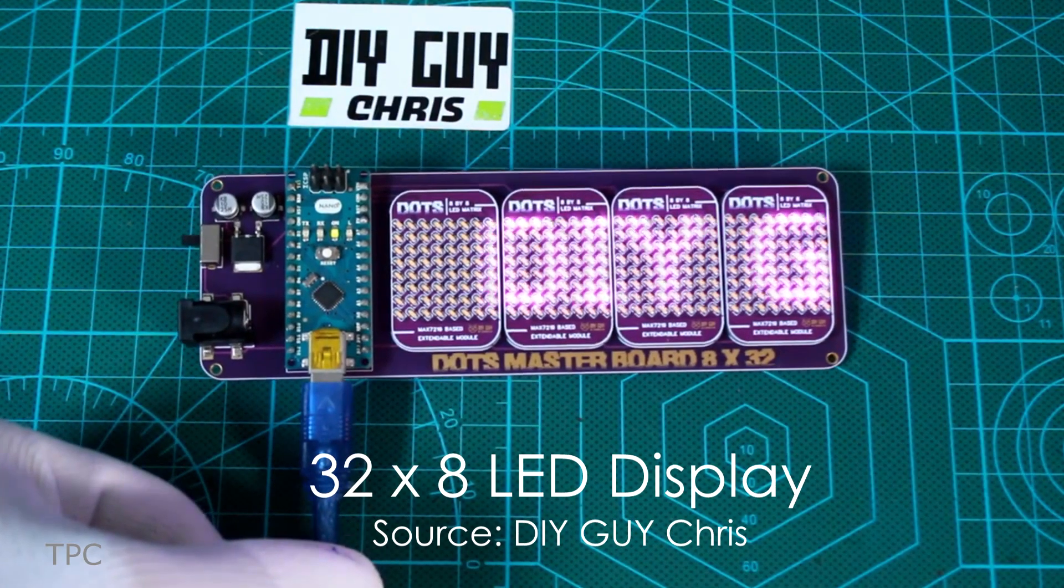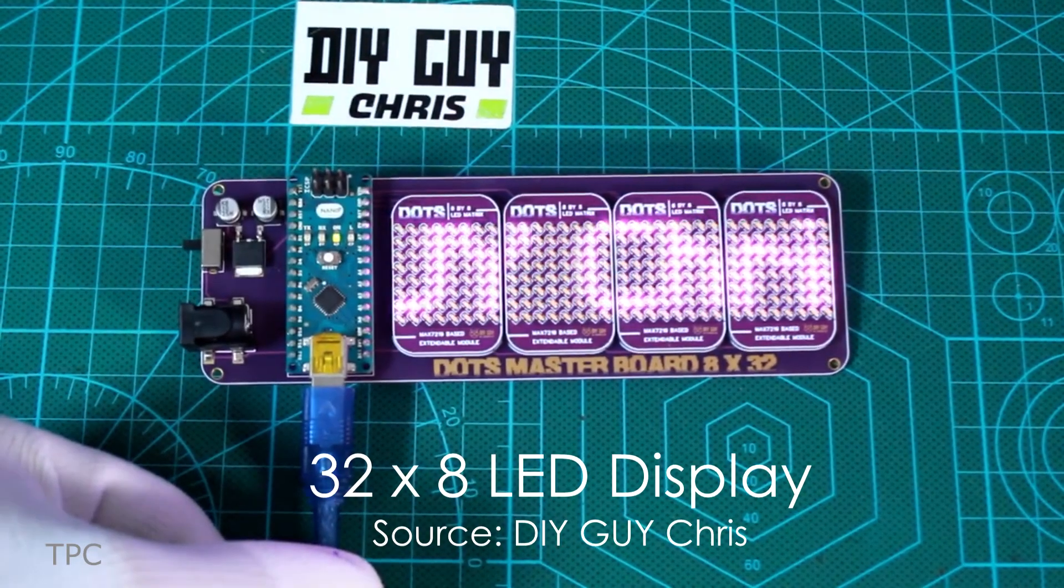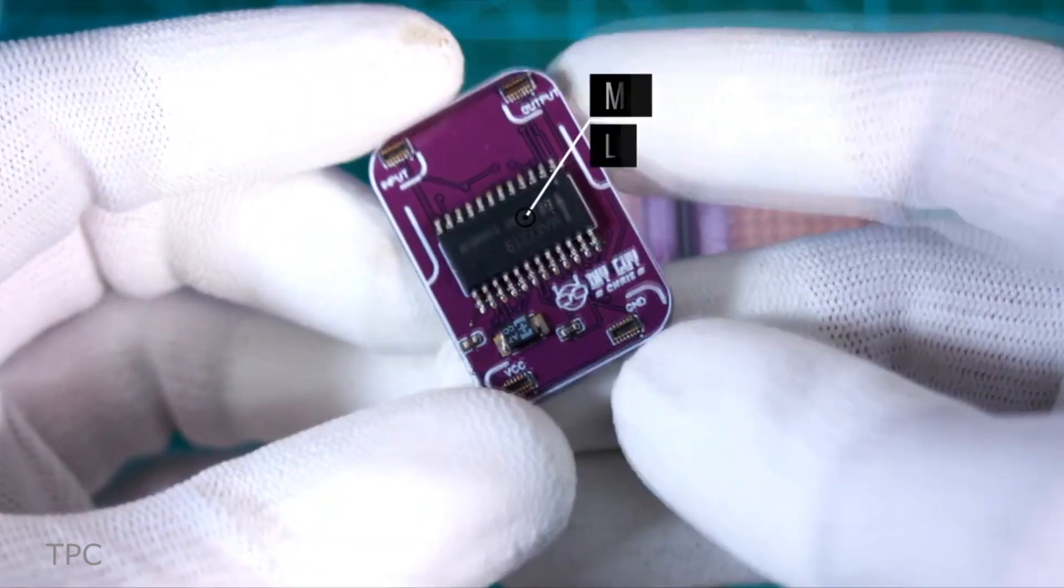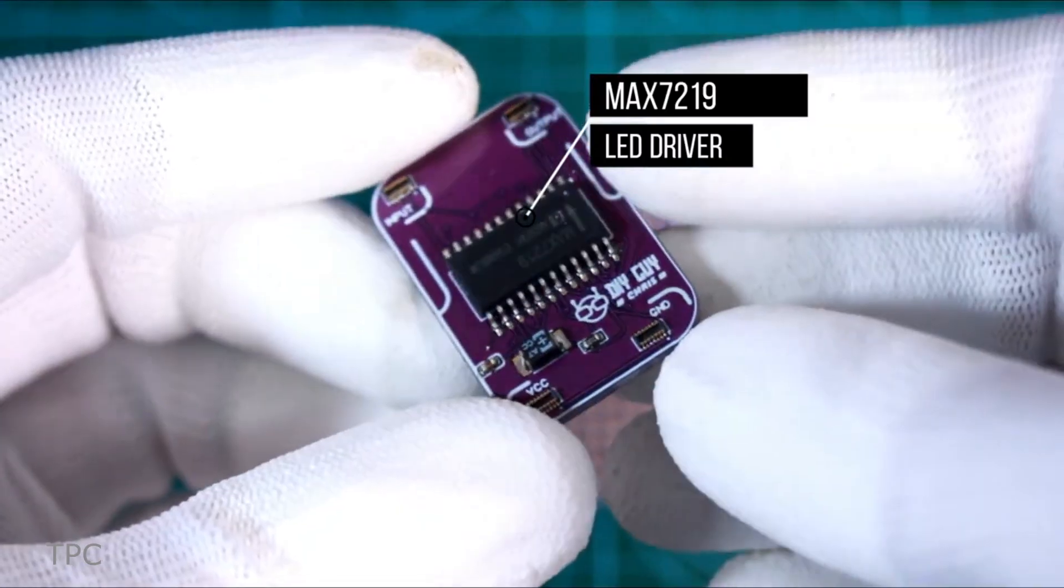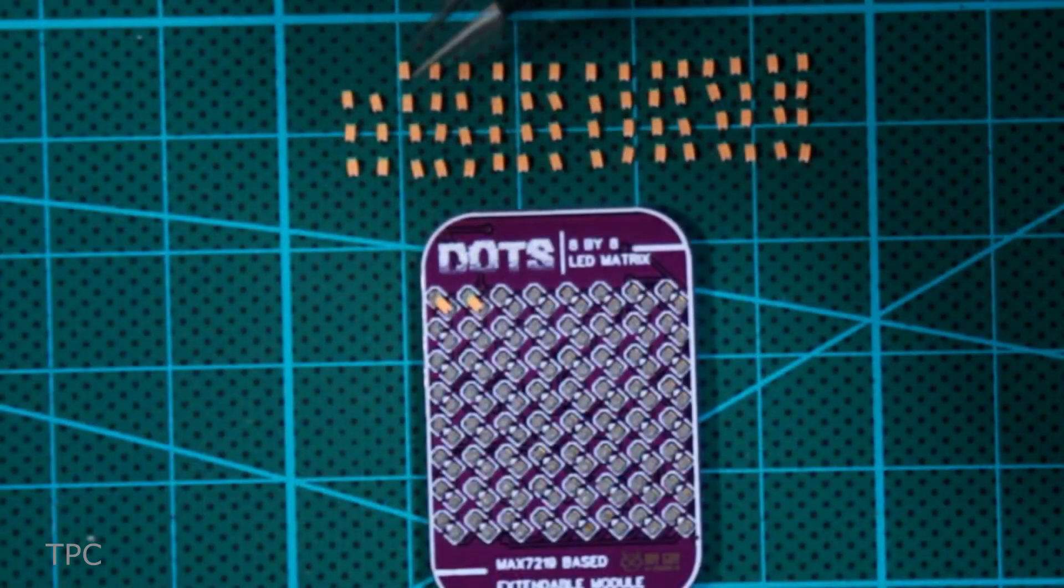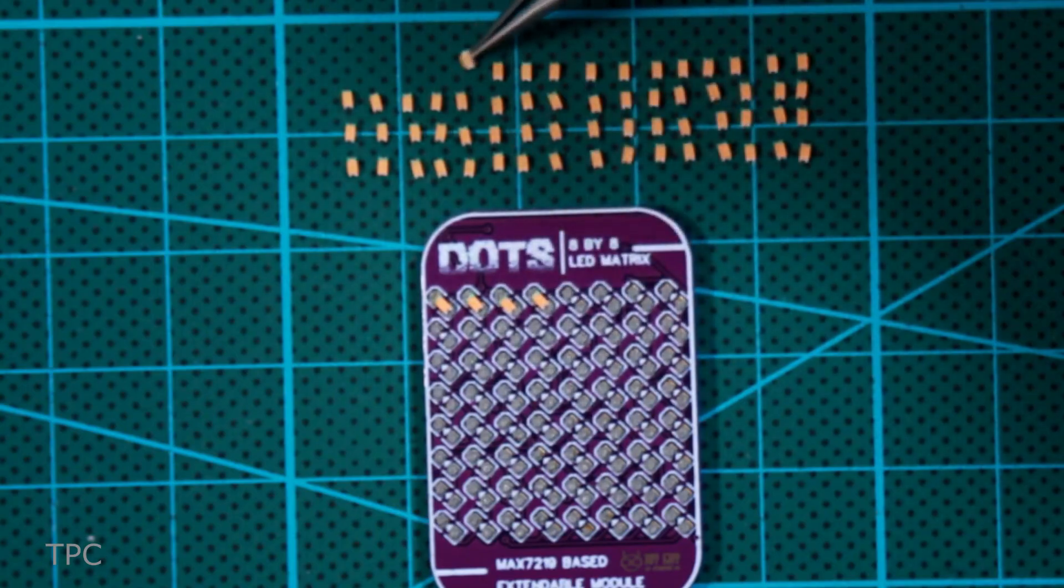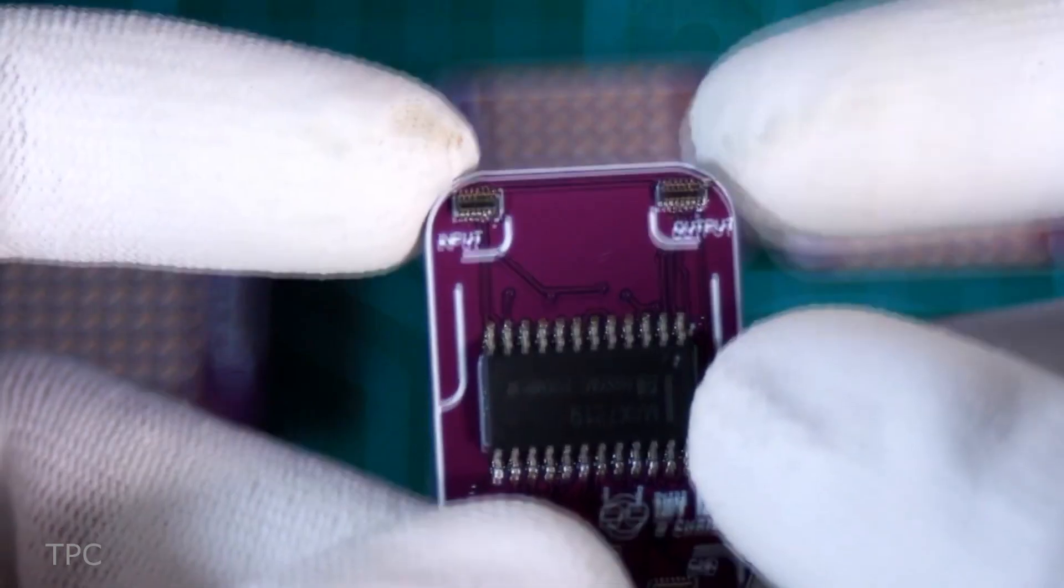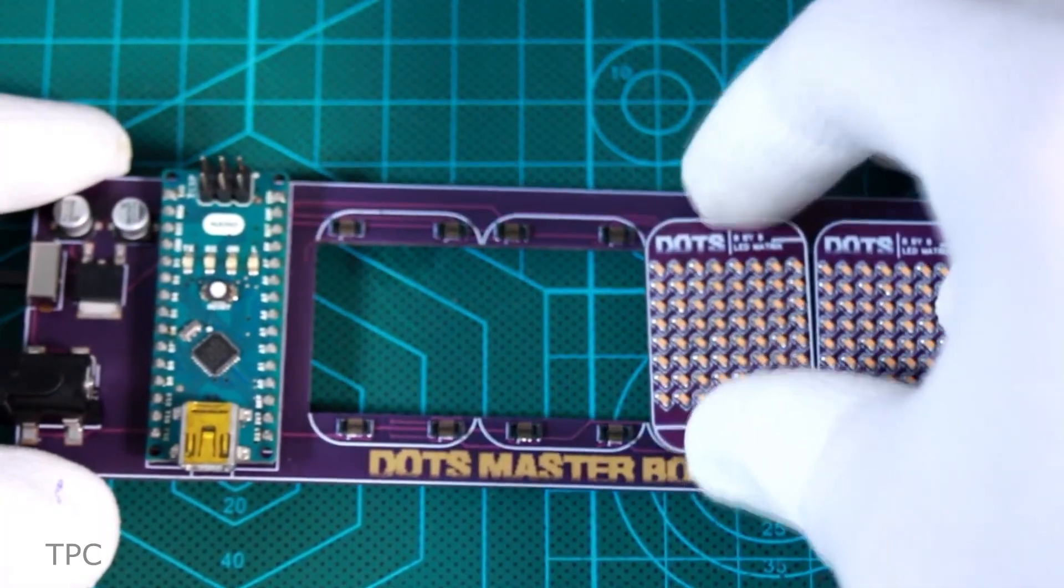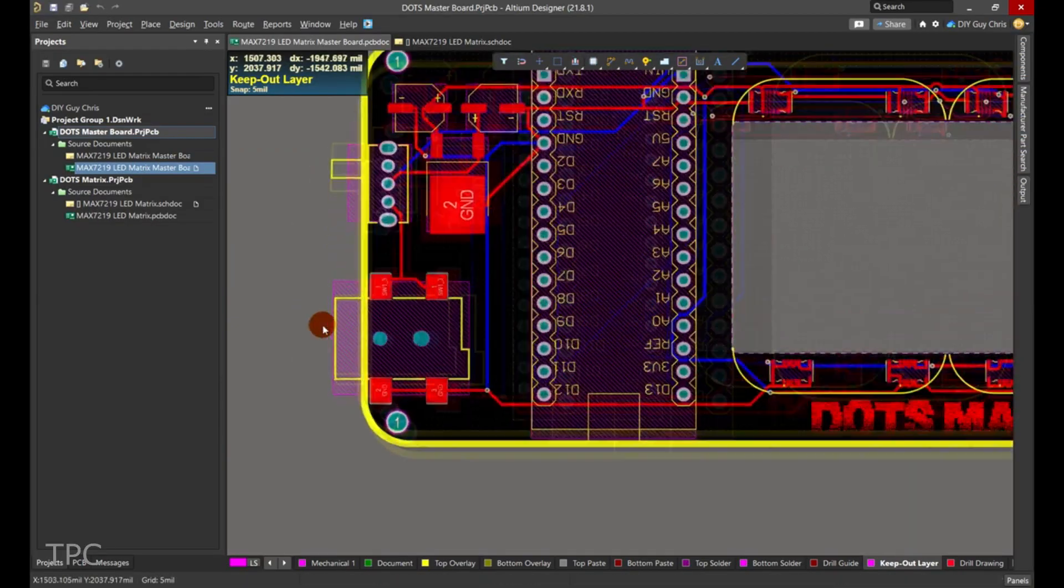Number 4. Chris created a 32x8 LED display using four small LED matrices. Each unit features an LED driver circuit that powers 64 LEDs arranged in an 8x8 format. The use of SMD components in each unit makes it compact.